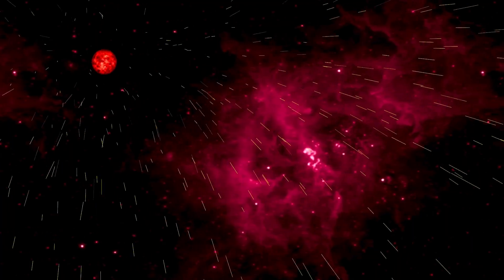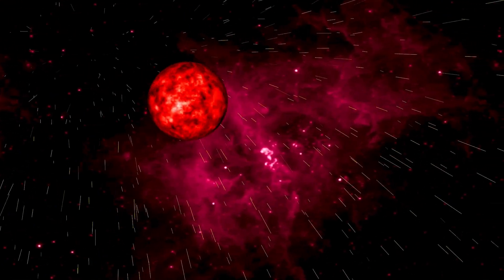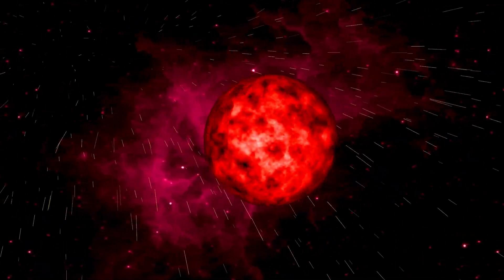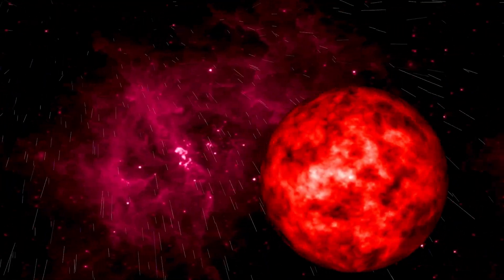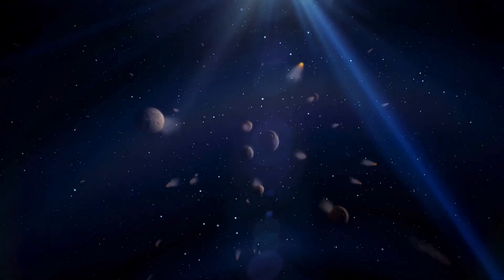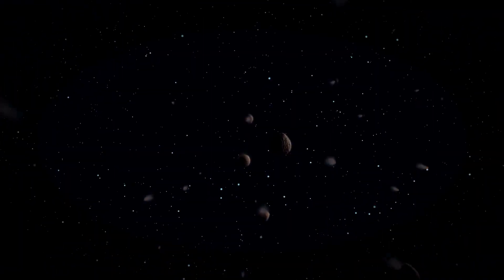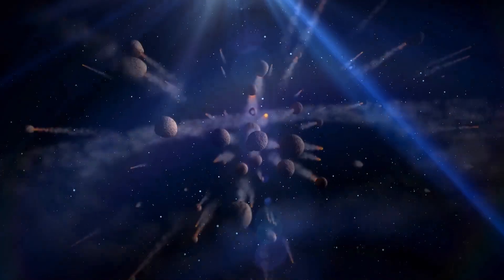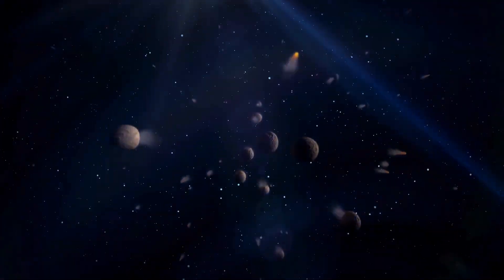Can you imagine a single star dwarfing our entire solar system? To provide some perspective on the sheer enormity of Betelgeuse, if it took the place of our sun, its edges would extend all the way to Jupiter. How can a single star achieve such colossal proportions? At 10 million years old, it's a lot younger than our 5-billion-year-old sun, but Betelgeuse's massive size means it consumes its material at a much faster pace, predicting a shorter lifespan than that of other stars.